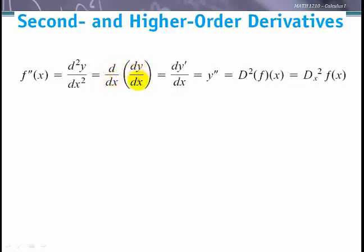Taking a derivative of the derivative is essentially what the second derivative means: find the derivative, and then find the derivative of that derivative.